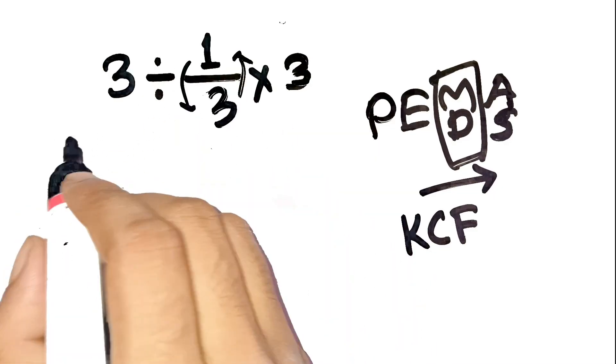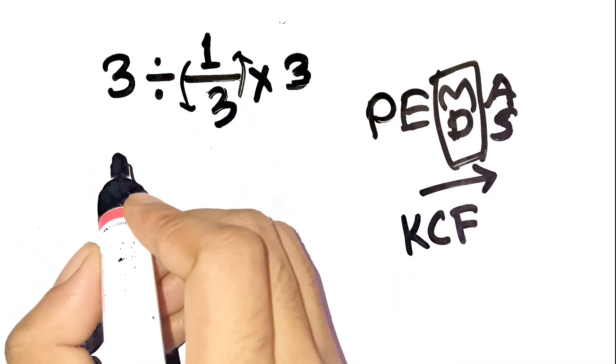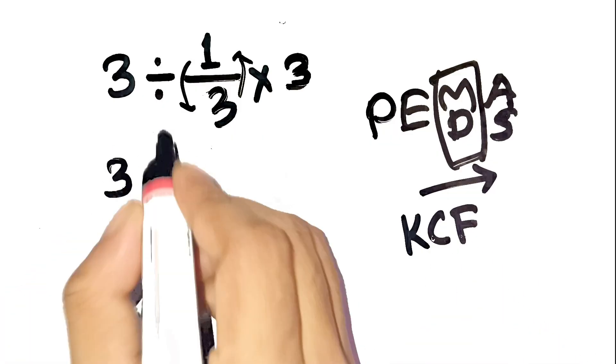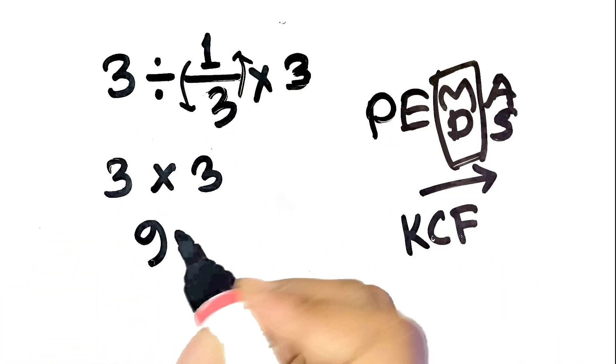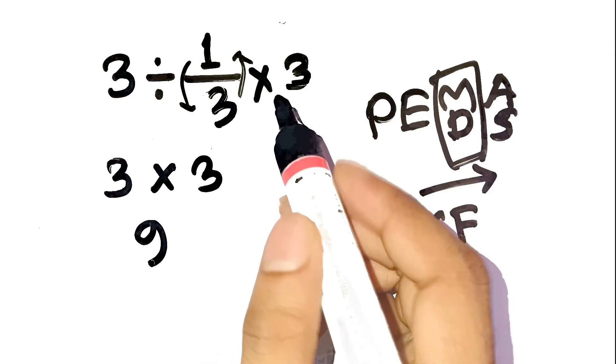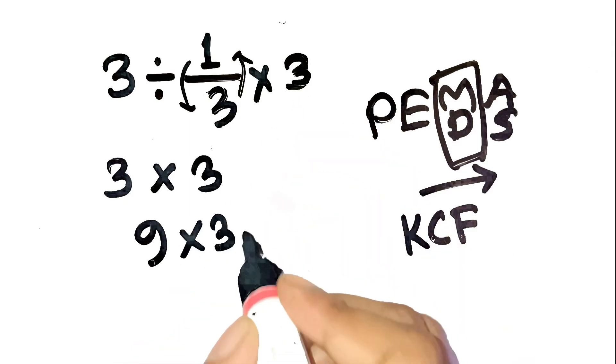Step-by-step, start with three divided by one third. Using keep, change, flip, that becomes three times three, which equals nine. Now multiply that by the last three. Nine times three equals 27.